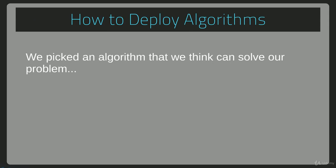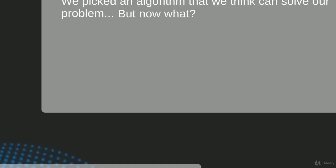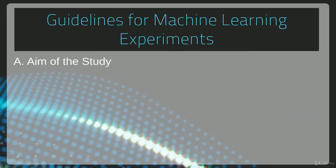So we picked an algorithm that we think can solve our problem. Now, how do we make sure that it actually can? What we need to do is we need to start by stating the problem clearly and defining what the objectives are.